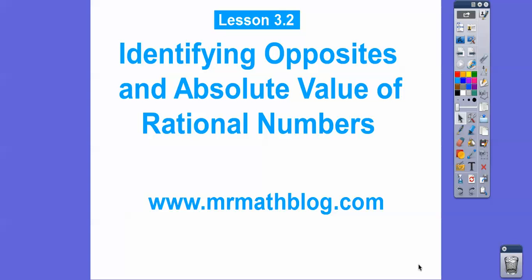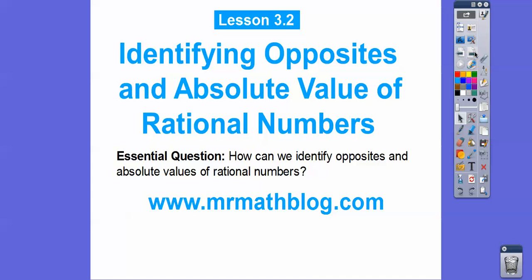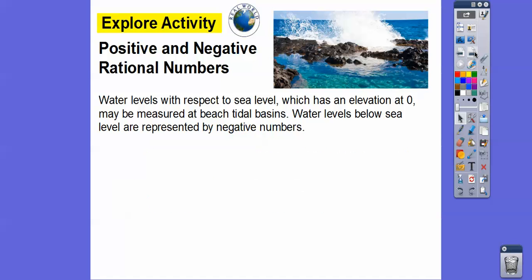Hey everybody, this lesson is identifying opposites and absolute values of rational numbers. This is lesson 3.2 in module 3, lesson 2. Our question is: how can we identify opposites and absolute values of rational numbers?